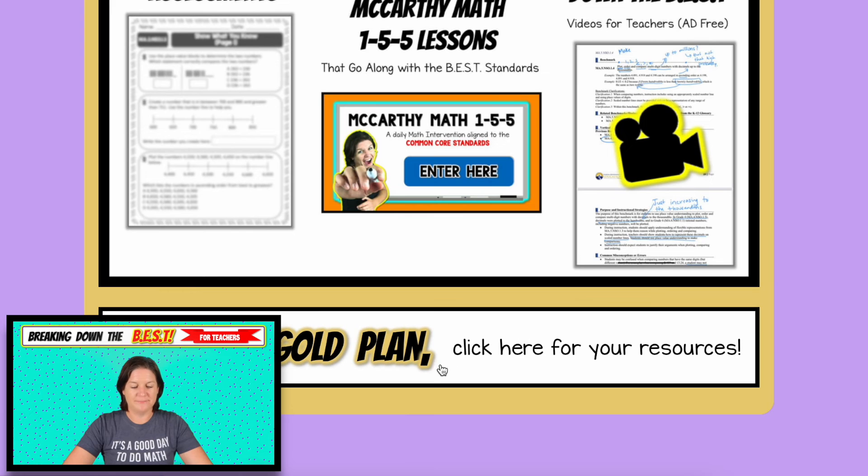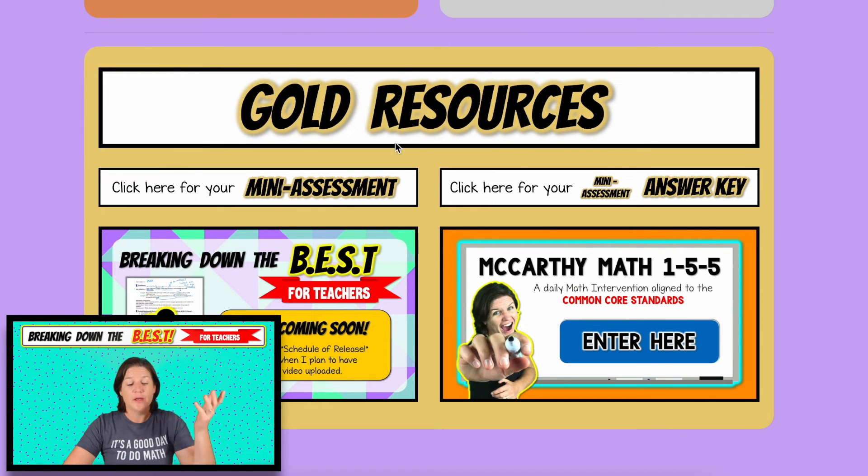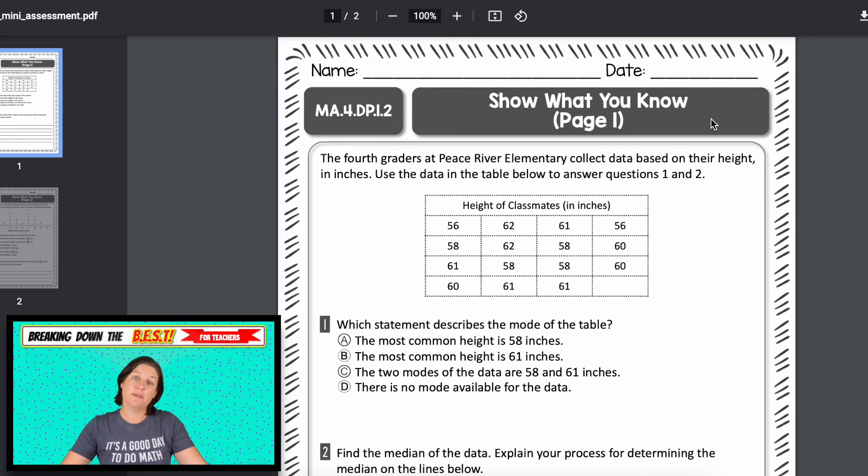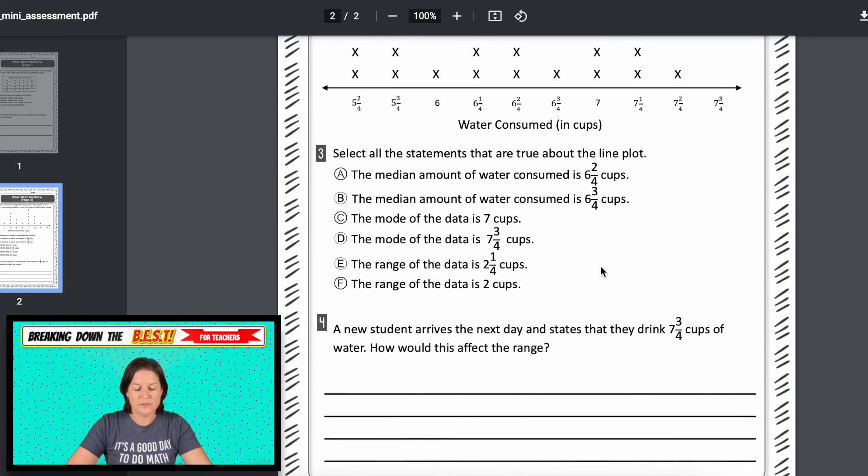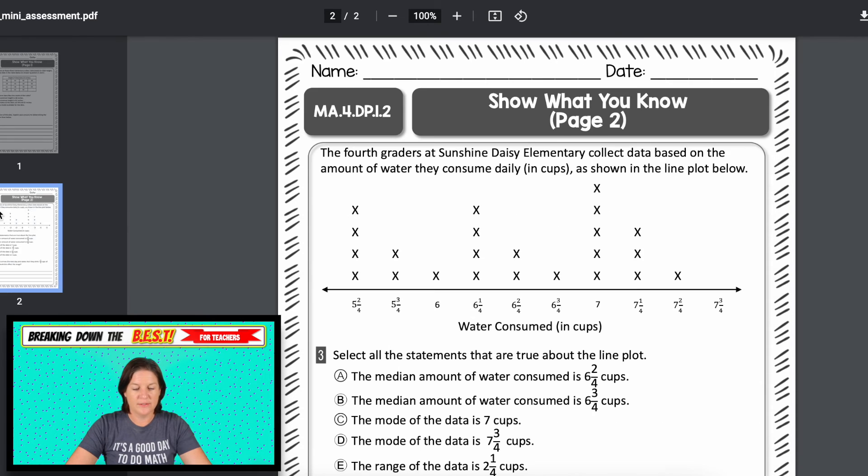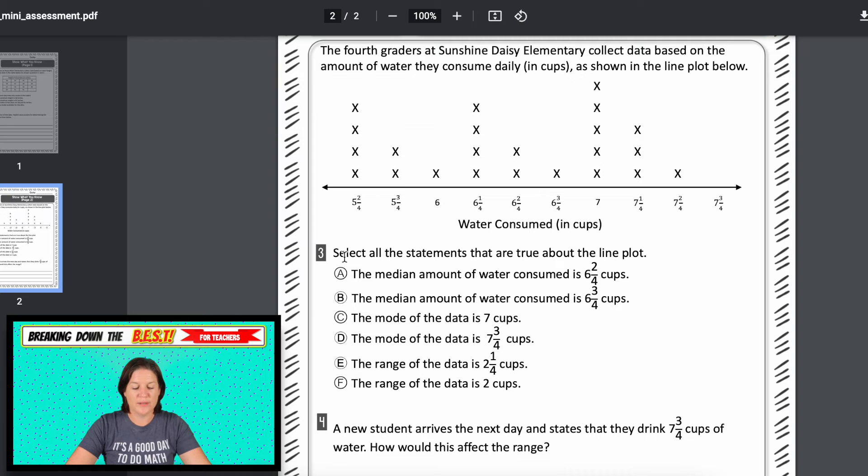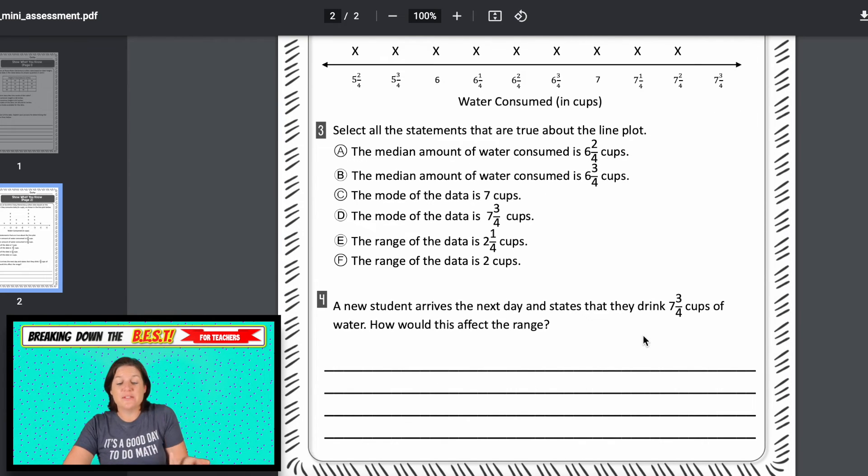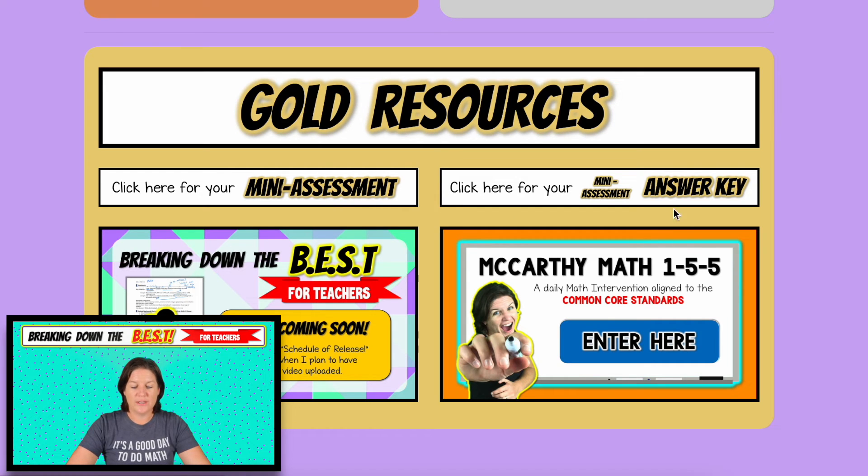And then finally we have the gold plan. The gold plan gives you access to everything we've gone over so far, plus a mini assessment for each standard. So for 4.DP.1.2, we have this test. You can see it says show what you know. These mini assessments usually are four to five questions. You can see the variety type. We're talking about the mode based on the data, the median and explain your process. Here, which ones are true about this. And then for number four, if a new student arrives and we're adding another piece of data, how is that going to affect what we've already stated the range might be? So these are aligned to the standard and easy for you to just print and go.